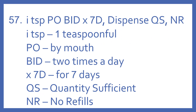So to interpret this prescription: 1 TSP means one teaspoonful, PO is by mouth, BID is two times a day, times 7D for seven days, QS is quantity sufficient, and NR means no refills. So the directions are one teaspoonful by mouth two times a day for seven days.